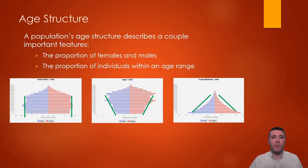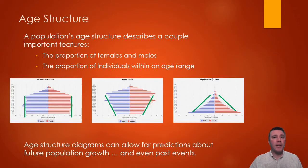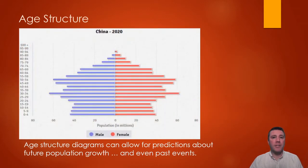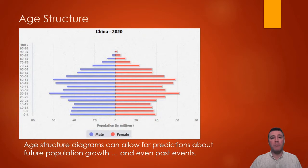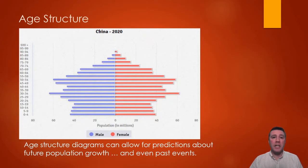Not only are age structure diagrams useful for making predictions about the future, they can also carry indications of past events. For example, this age structure diagram of China exhibits indentations in the groups of people from their mid-30s and mid-40s. Between about 1959 and 1961, largely attributed to government policies collectively referred to as the Great Leap Forward, China experienced a massive famine resulting in the deaths of up to 55 million people, causing a sharp drop in the number of children people had. Additionally, the shorter population bars from the 30 to 34-year-old to the 15 to 19-year-old age group is an artifact of China's one-child policy.